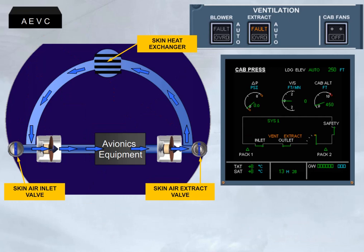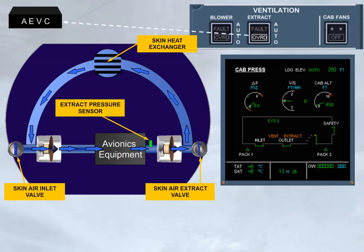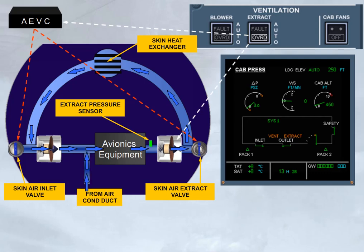A fault light comes on the related switch in case of an extraction flow problem. Setting that push-button switch to override allows the ventilation system to be reconfigured by activating the closed circuit configuration, by transferring the control of the extract fan to the push-button switch, and by adding air from the air conditioning duct through an air conditioning inlet valve.